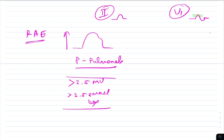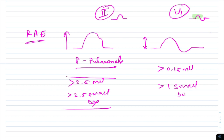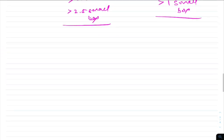In lead V1 with right atrial enlargement, the initial positive deflection — due to the right atrium — shows increased amplitude, followed by a normal negative deflection. The amplitude of this positive deflection should be more than 0.15 mV, or simply more than one small box, to be diagnostic.